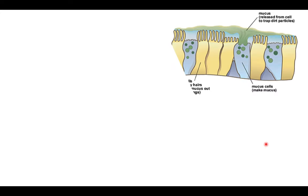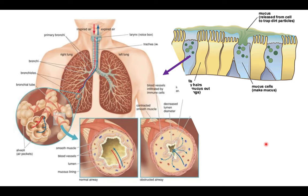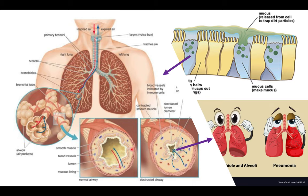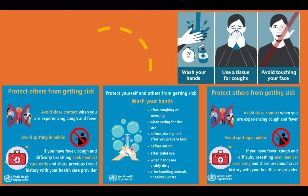SARS-CoV-2 (COVID-19) and the original SARS-CoV from 2002 have very similar pleomorphic structures. Both affect mucus cells and goblet cells, causing immune cell infiltration and clogging of the bronchial airways, as shown on screen. If the inflammatory response becomes greatly exaggerated, it can cause destruction of the pulmonary parenchyma, leading to pneumonia — inflammation of the lung tissue.